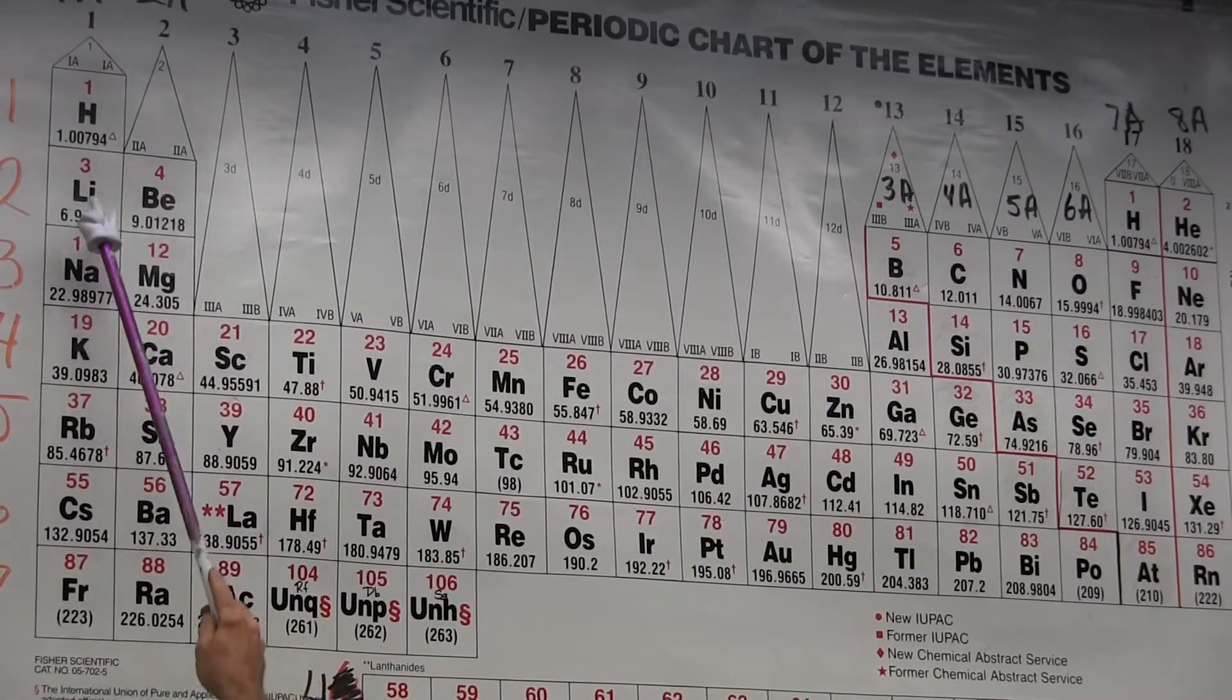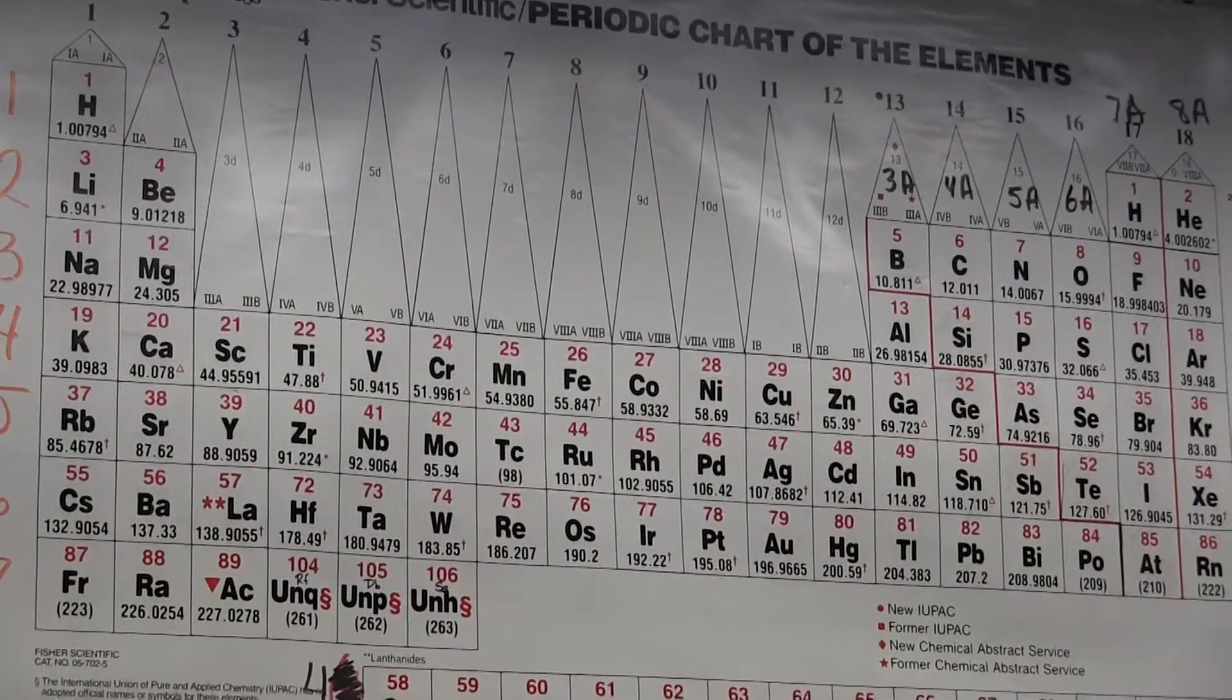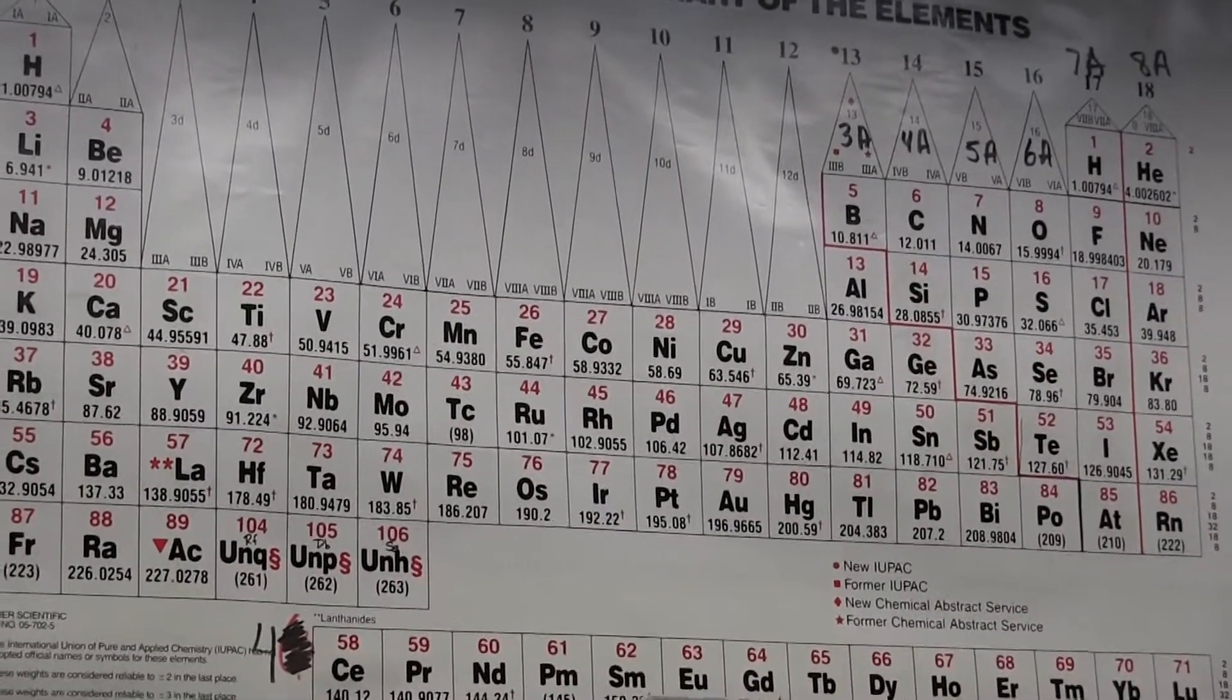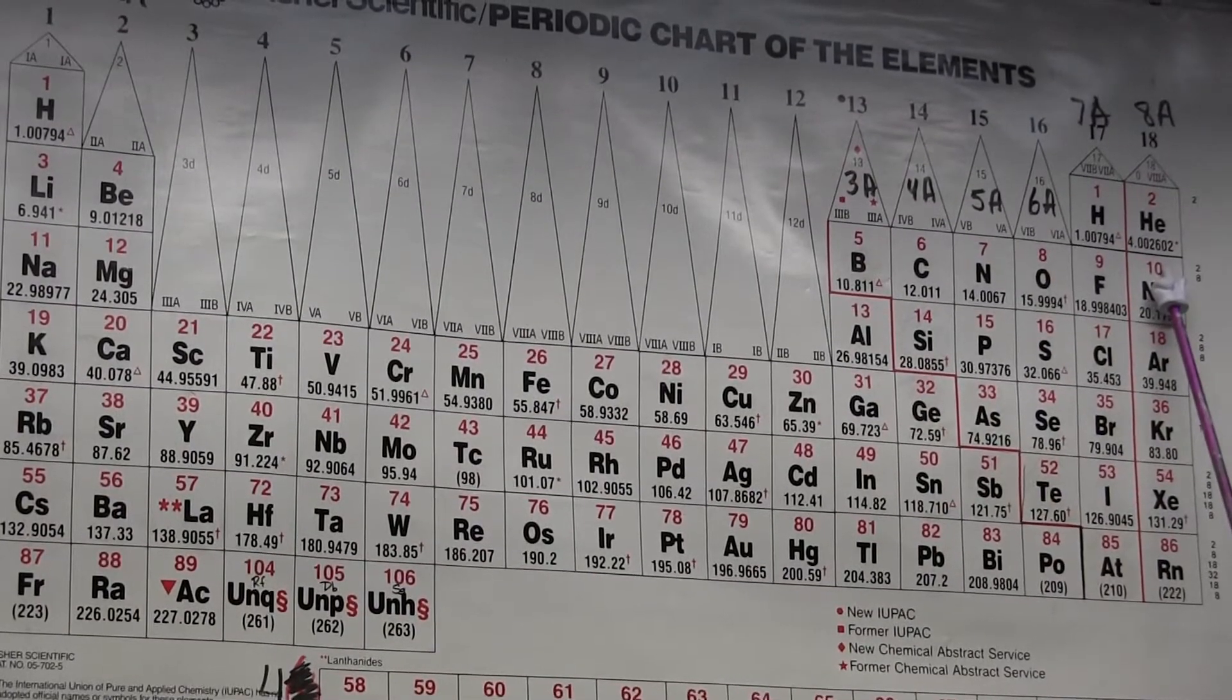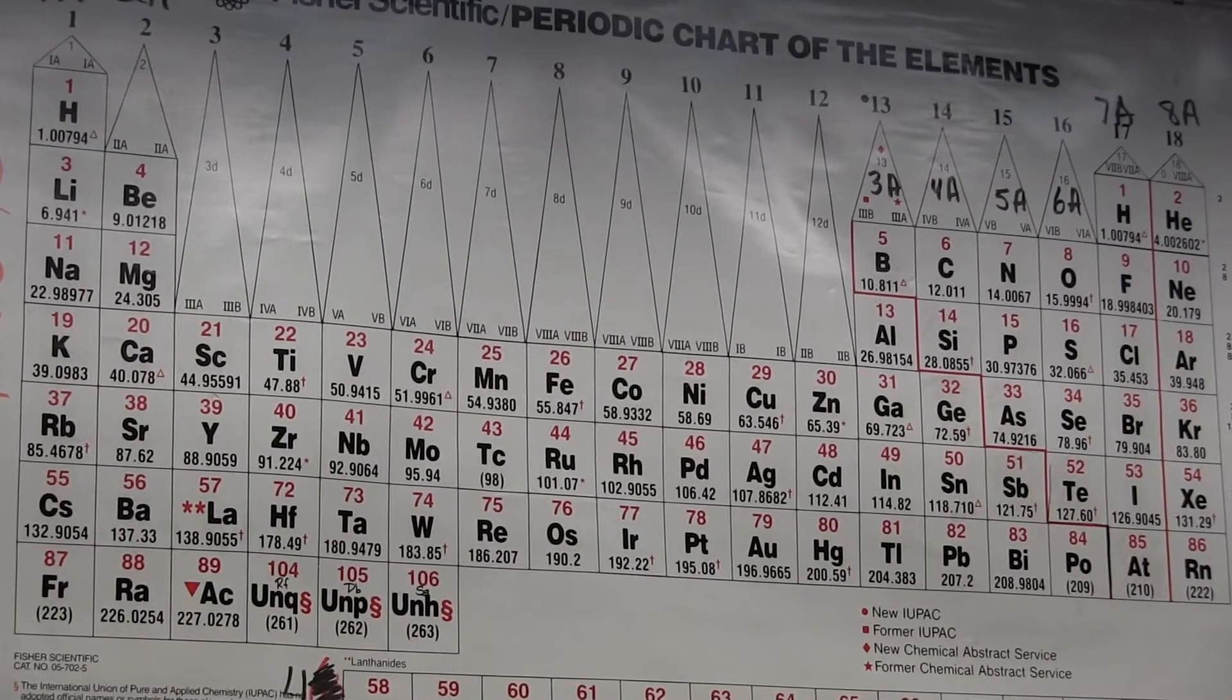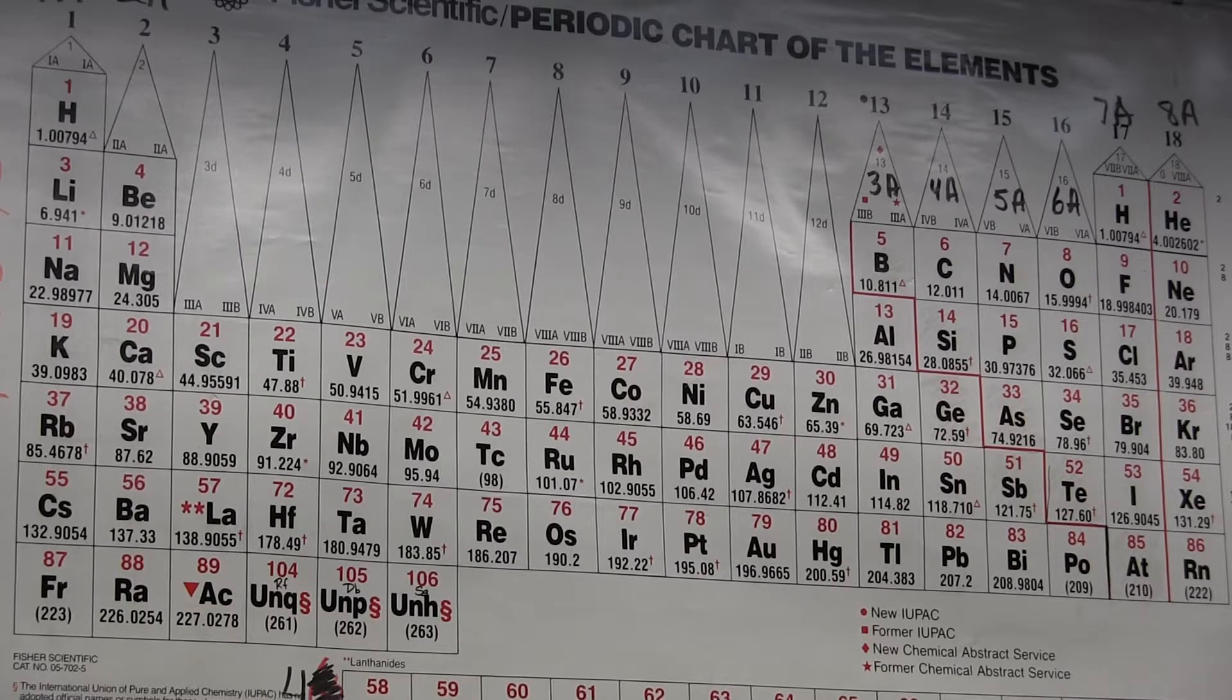If I'm talking about a second row element, I don't need to denote the K-shell electrons. Instead, I'll give the symbol for the noble gas, which is the filled shell closed shell electronic configuration, enclose that in brackets, and then write the valence electrons above that. That's the notation that will simplify things.